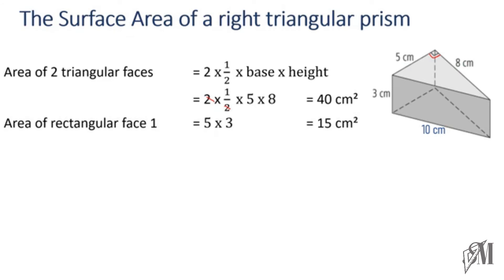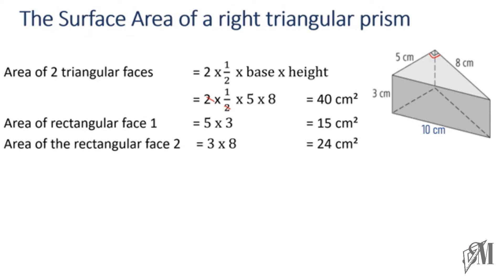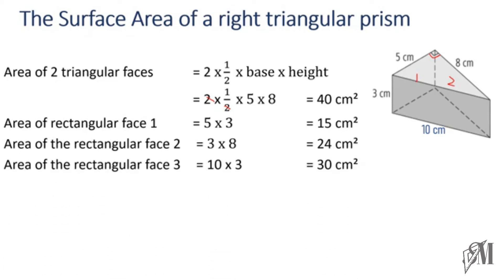Next is the area of the rectangular faces. The first rectangular face is 5 × 3 = 15. The second rectangular face is 3 × 8 = 24. The third rectangular face is 3 × 10 = 30. To find the total surface area we add all the values: 40 + 15 + 24 + 30 = 109 square centimeters. That is how you find the surface area of a right triangular prism.